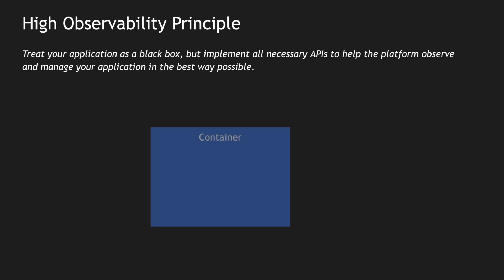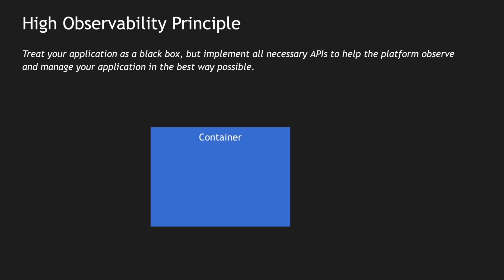Let me explain that with some diagrammatic representation. Imagine I have a container — I'm going to expose a health endpoint so that my platform or user can know if this application is alive or not. I can also define readiness and liveness endpoints so that my container platform can understand when it should be restarted, terminated, or when traffic should be sent to my application. I have a separate video on readiness and liveness if you'd like to learn more.